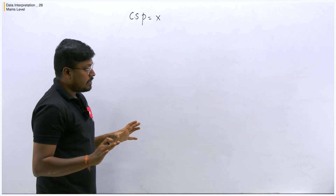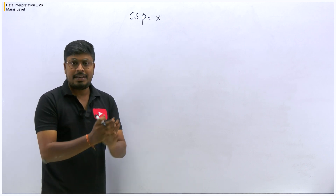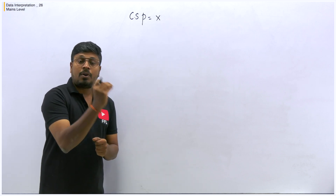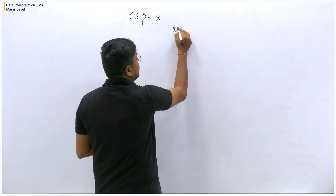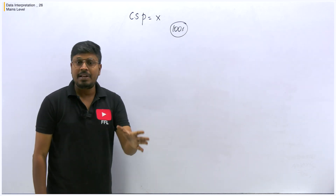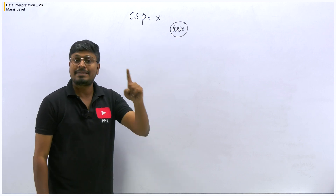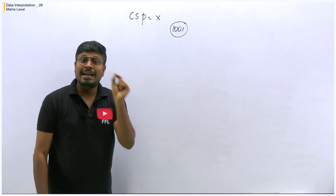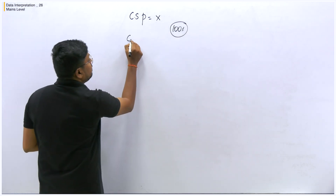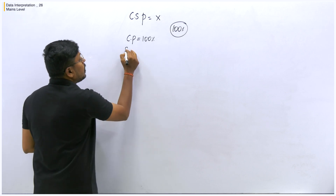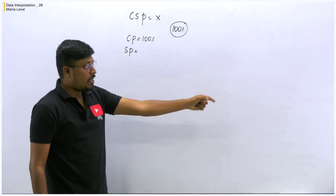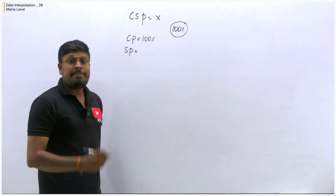So what can we do here? While teaching profit and loss in the introduction video, I mentioned this: every time in a question where the cost price of the article is not given, take it as 100%. In many videos while teaching profit and loss, I have said: if the cost price is not given, always consider the cost price as 100%.